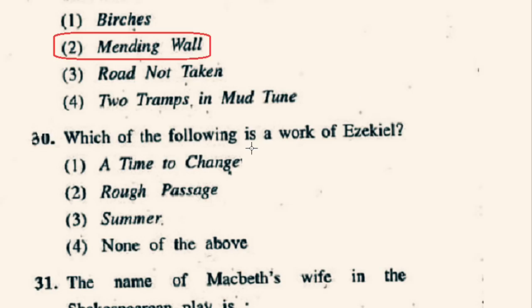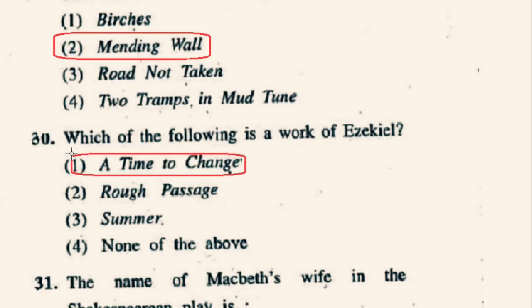Question number 30: Which of the following is a work of Ezekiel? In the given options, the poem A Time to Change is composed by Nissim Ezekiel. This poem was published in 1952. So the correct option will be 1st option, A Time to Change.